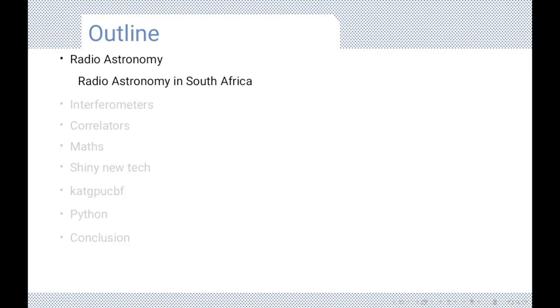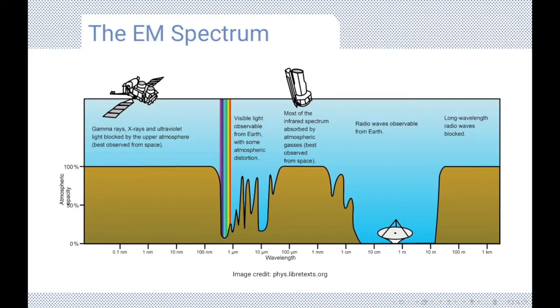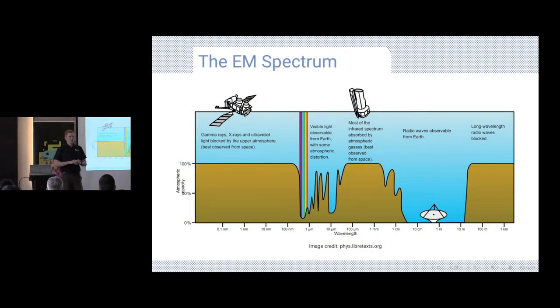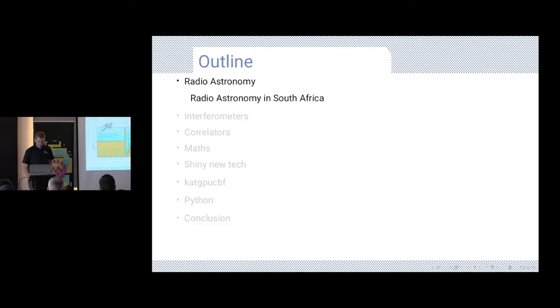So, first of all, what is radio astronomy? You've probably all heard of the Hubble Space Telescope and all these kinds of things. We can look out into the universe. And that happens in this very narrow band of the electromagnetic spectrum, which is optical. But the universe emits at all sorts of frequencies. Some of them we can observe from the Earth. Some of them we can't. Radio astronomy operates down here where we've got frequencies quite low or wavelengths quite a bit longer. Much more on the spectrum than just visible light.